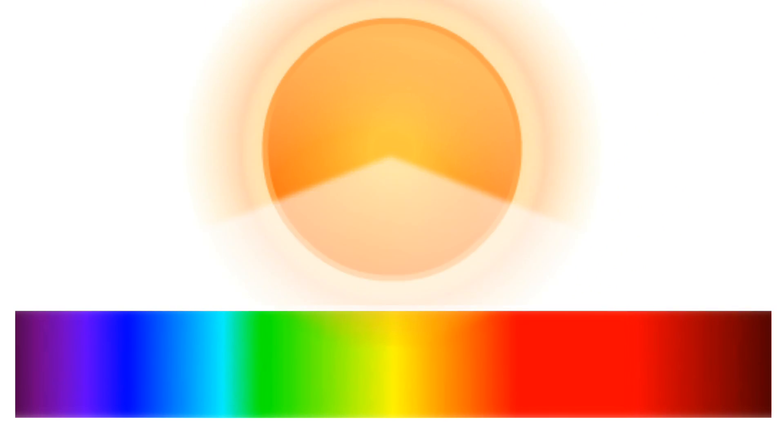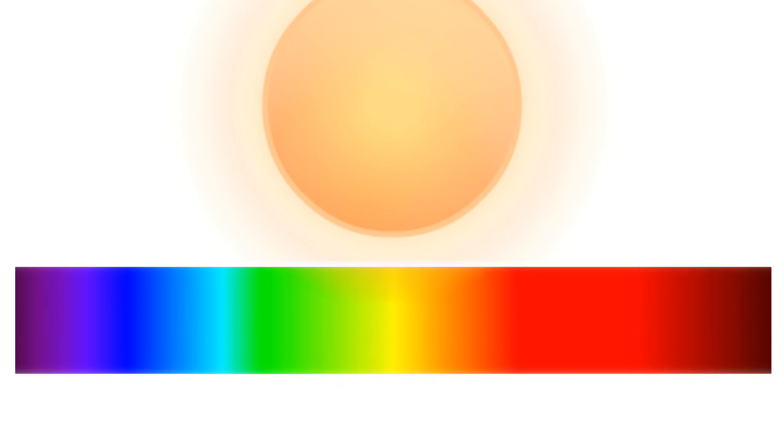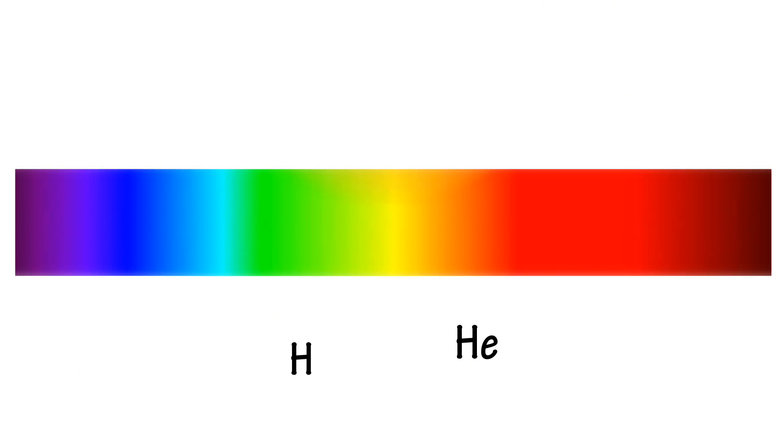Each of these elements absorbs certain wavelengths of light. White light is made up of the full spectrum of wavelengths. But the presence of elements such as hydrogen and helium results in black lines in the spectrum.